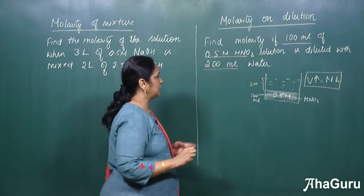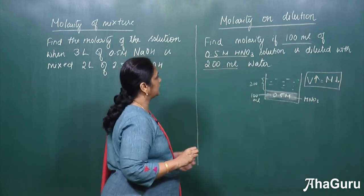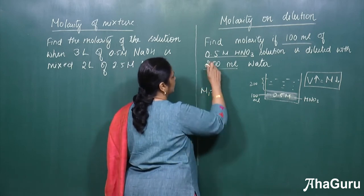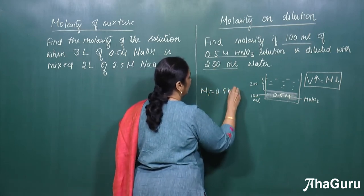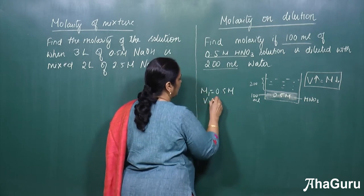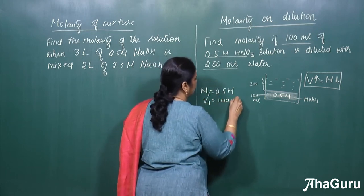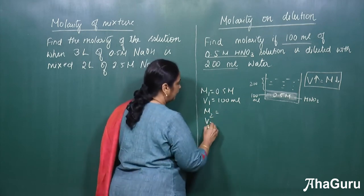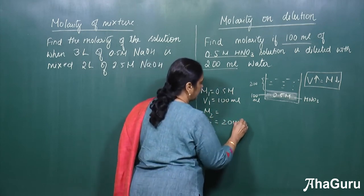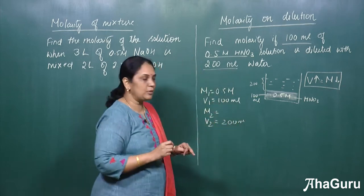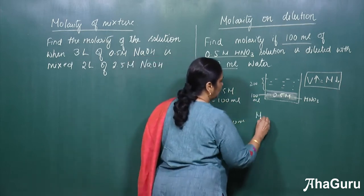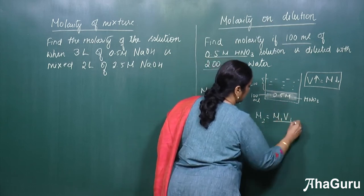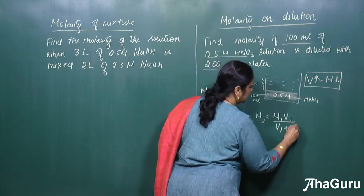So the formula to be used here is, so first let us see what is given. M1 is given, that is 0.5 M. V1 is equal to 100 ml. Again, M2 is what we have to calculate on dilution and V2 is given as 200 ml. So the formula used here is, M2 will be equal to M1 V1 divided by V1 plus V2.